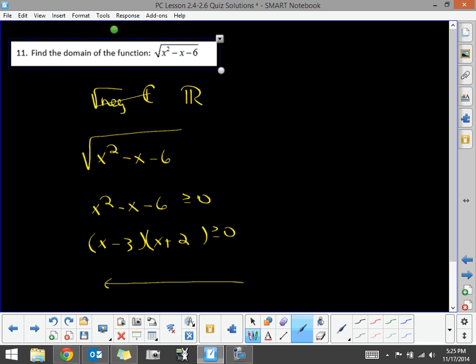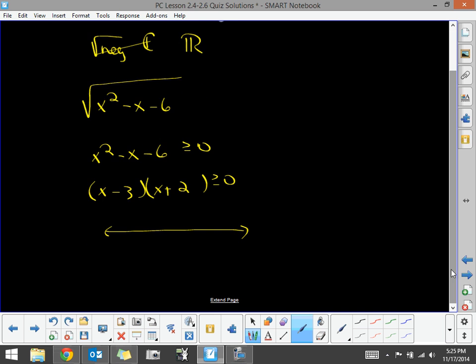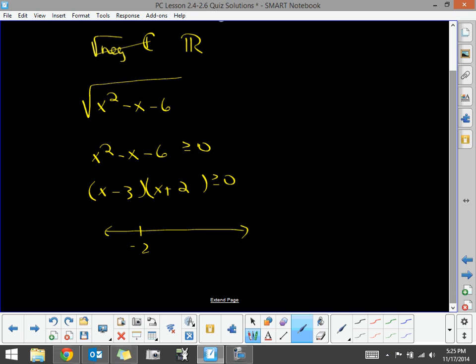Now using that same concept that we were using on the previous problem number 10, we know it's equal to 0 at negative 2 and at positive 3. We have a smiling quadratic equation.